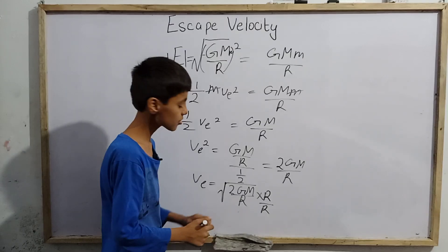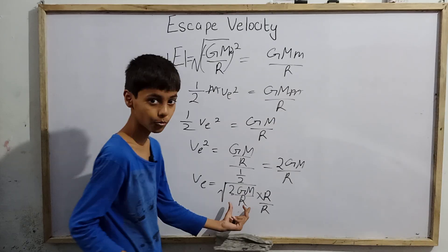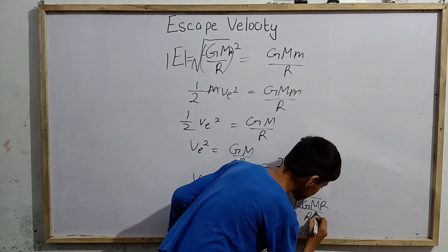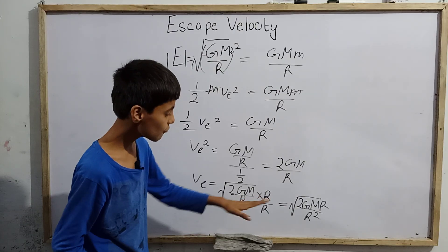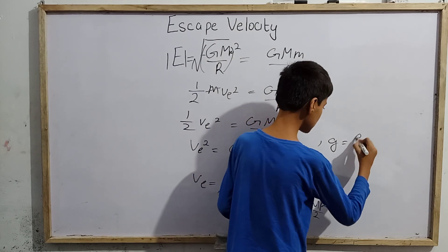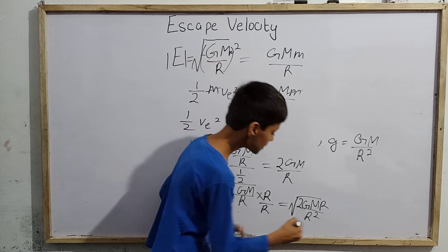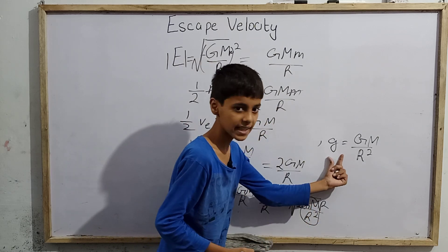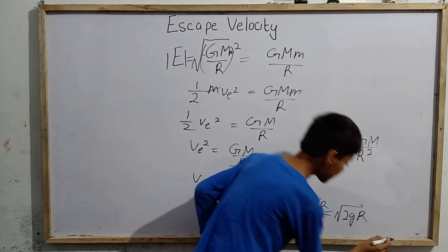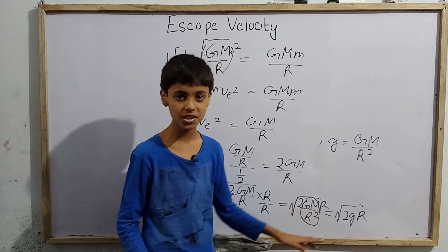So v_e equals the root of 2GMr divided by r squared. Now since we know that small g equals GM divided by r squared — that is the acceleration due to gravity — we take GM divided by r squared as small g. Therefore v_e equals root of 2gr. So finally v_e equals root of 2gR. How simple this equation has become!